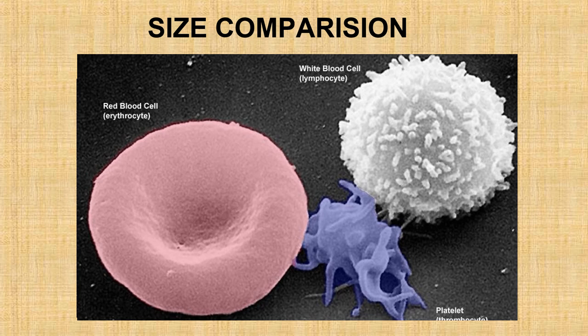If we compare the size of the blood cell components — RBC, WBC, and platelets — RBC is 7.2 microns, WBC (for example, lymphocyte) is 10 to 12 micrometers, whereas platelets are only 1.5 to 3.0 micrometers. So the platelet is the smallest blood cell component.